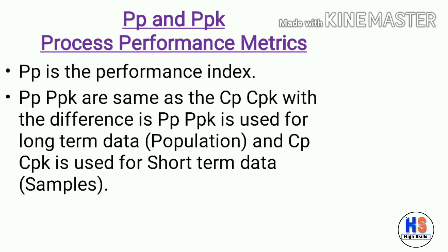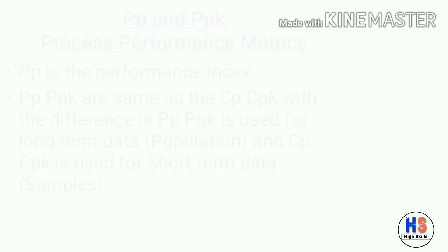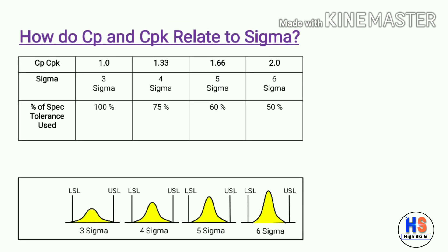PP and PPK are the same as CP and CPK with one key difference: PP and PPK are used for long-term data, which represents the population, whereas CP and CPK are used for short-term data, which are samples.